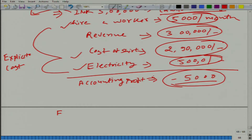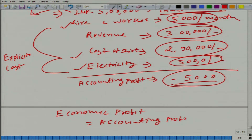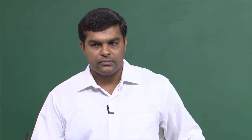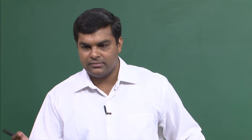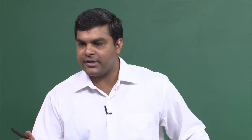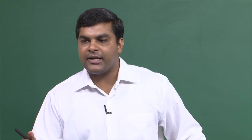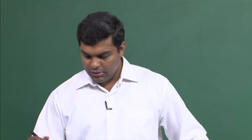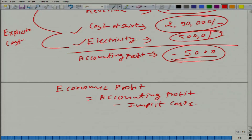How about economic profit? What we do is take accounting profit and subtract implicit costs — opportunity costs. You are forgoing wages: if you had taken one of the jobs the placement office offered you, you could have earned, let us say, 25,000 rupees per month. So the economic profit in this case is minus 30,000 rupees.